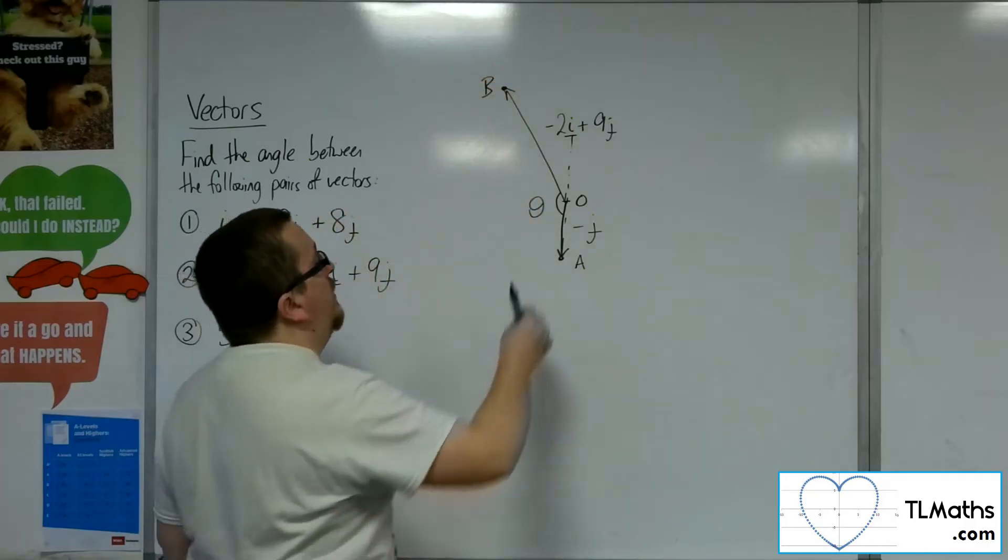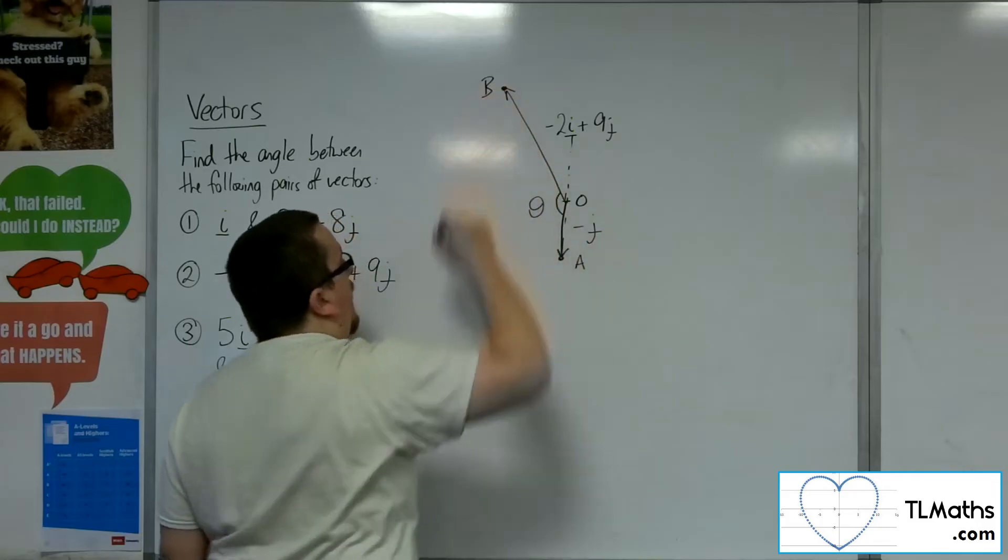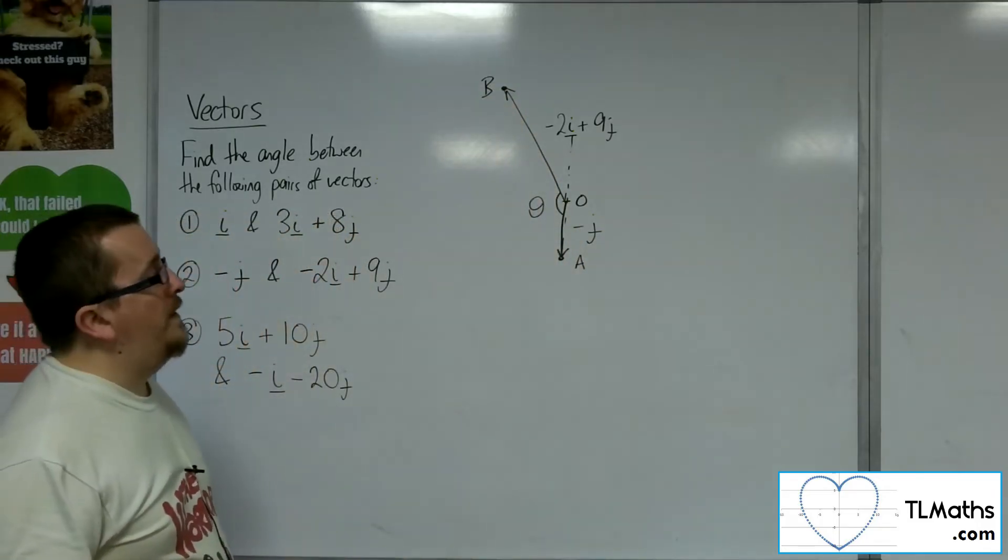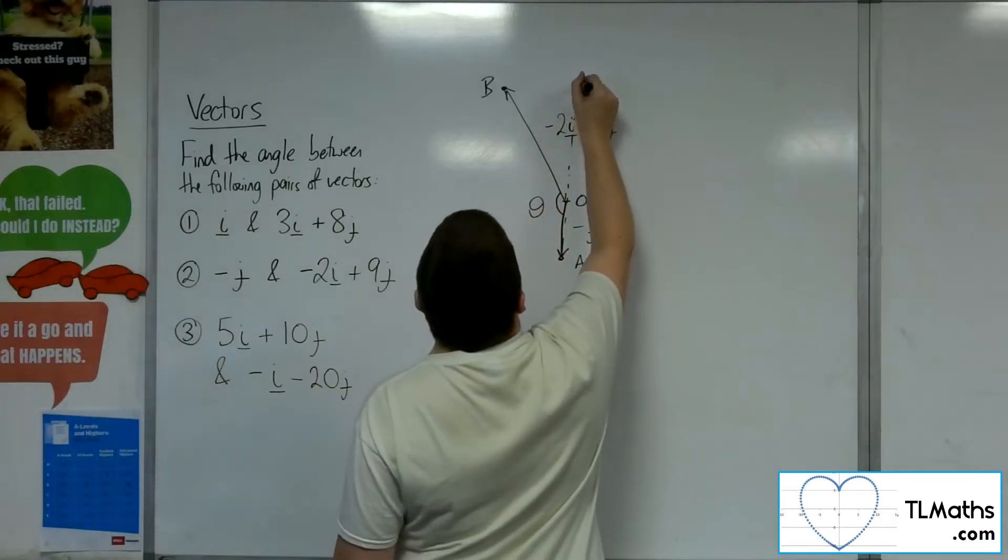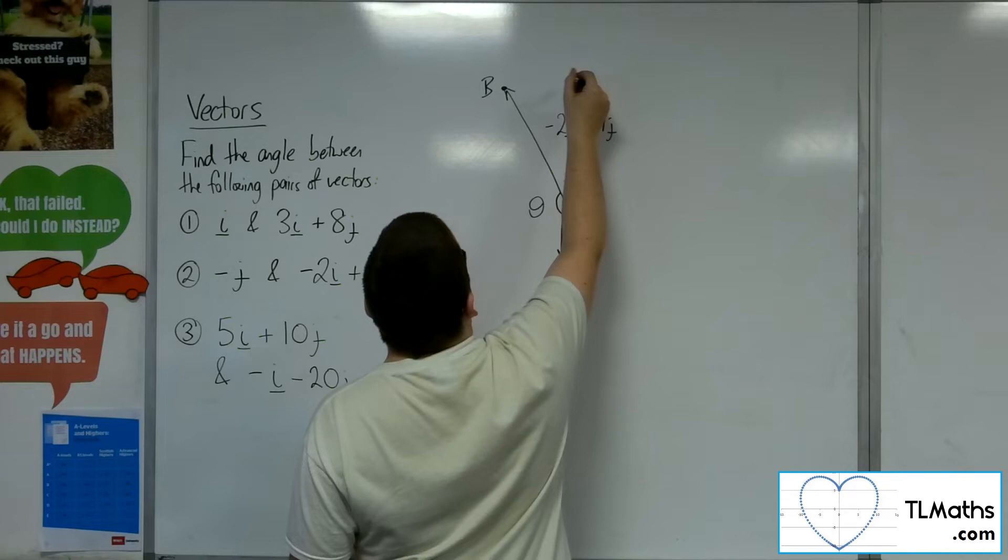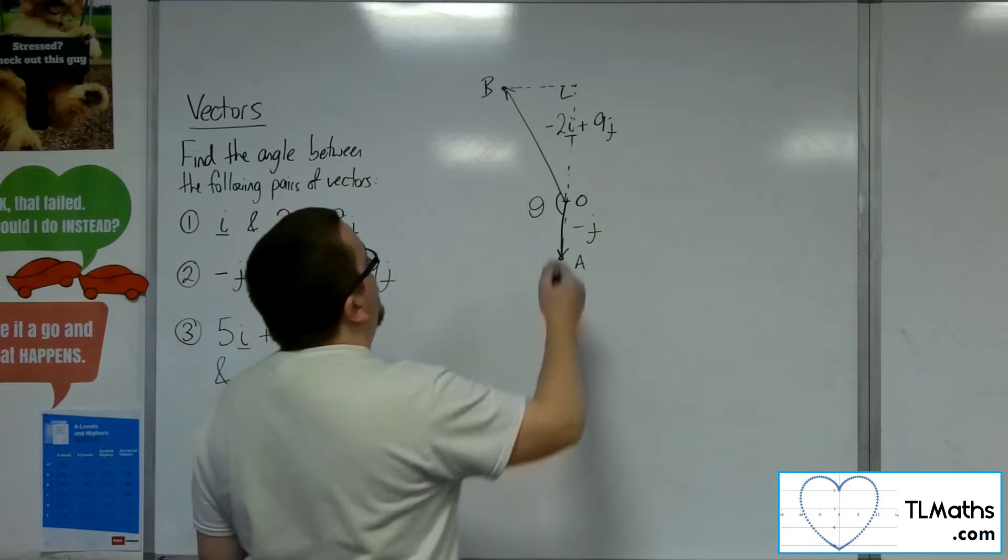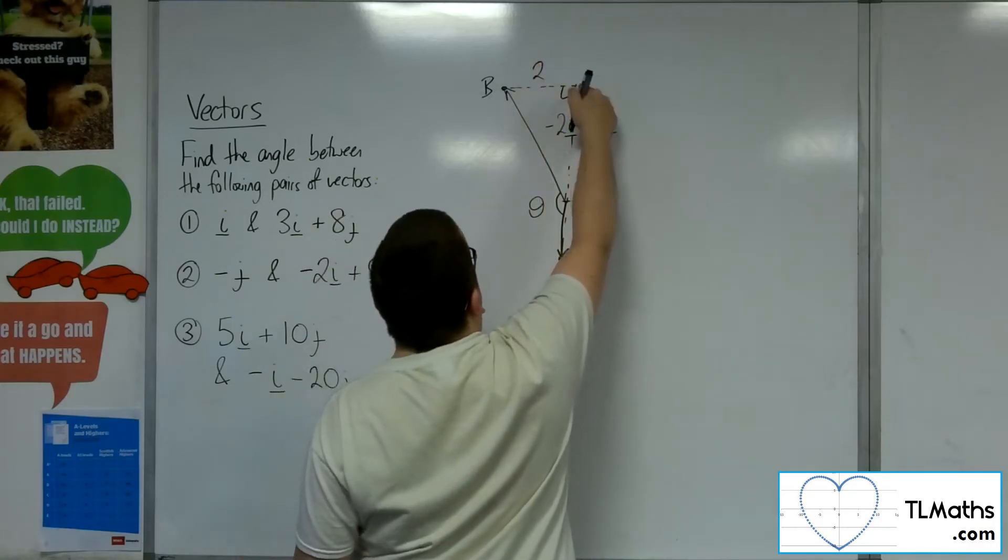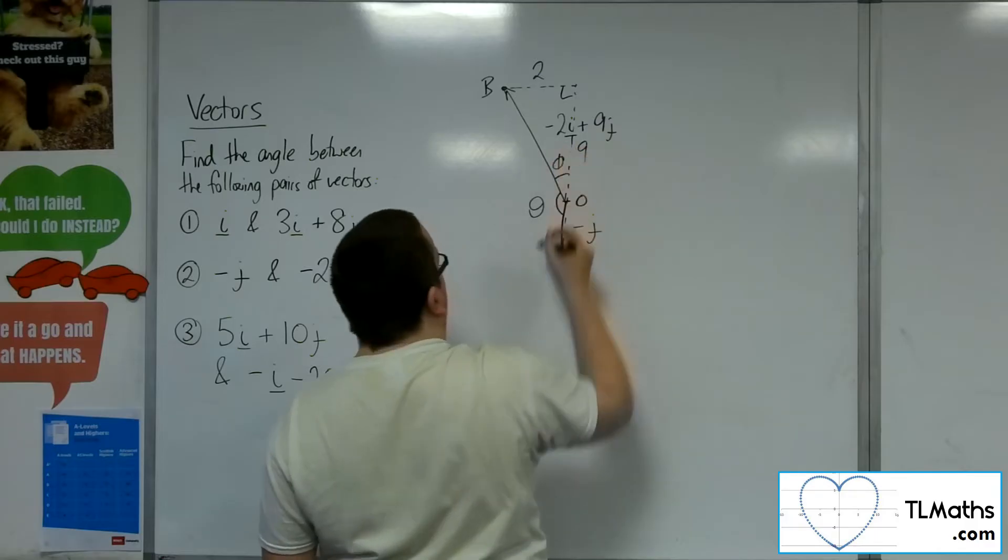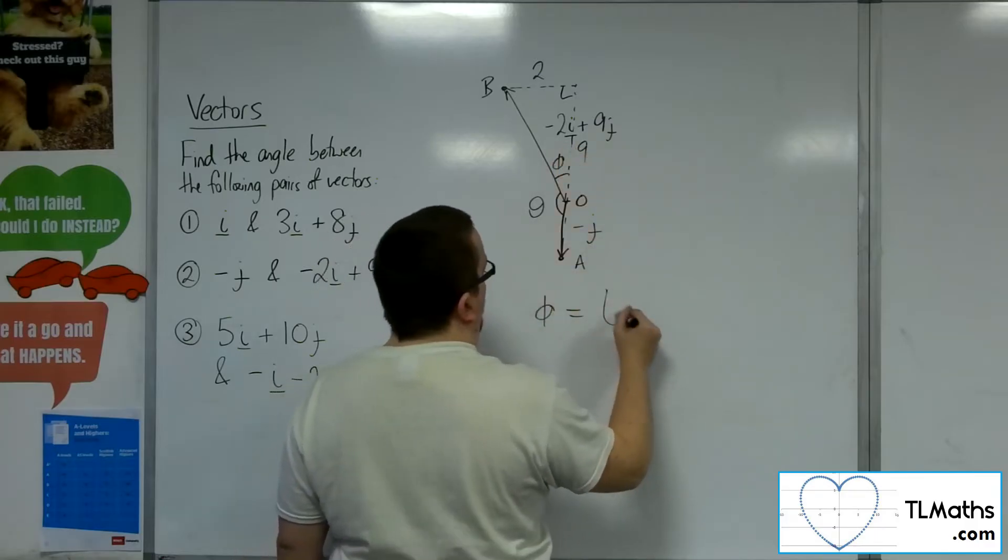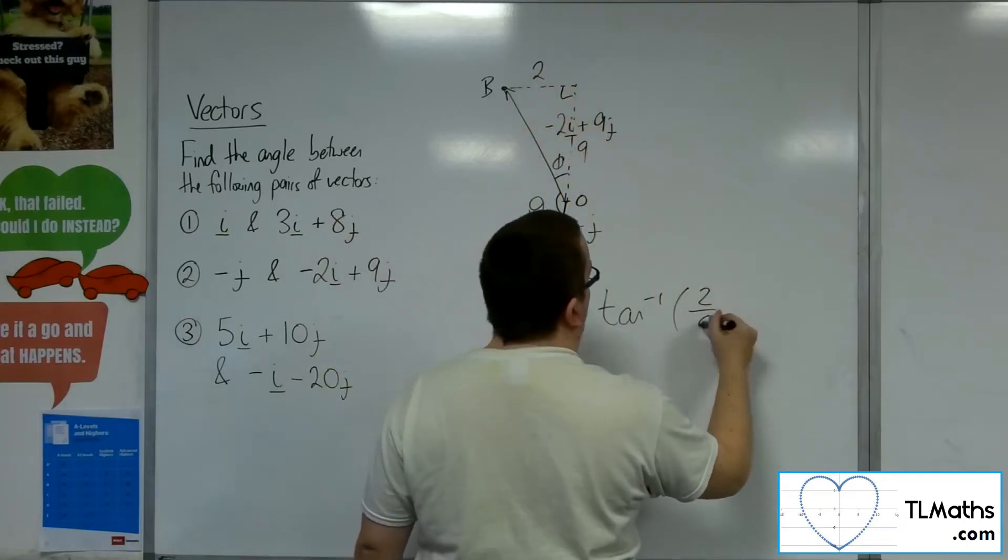Once again, I could find the length of that vector, length of that vector, the length of that AB, and then use the cosine rule to find the angle required. However, a shortcut would be to continue that vertical axis and look at that right-angled triangle, because I know that that's got a length there of 2. That one is 9. So I can work out this angle here. So phi will be the inverse tan of the opposite over the adjacent, so 2 ninths.